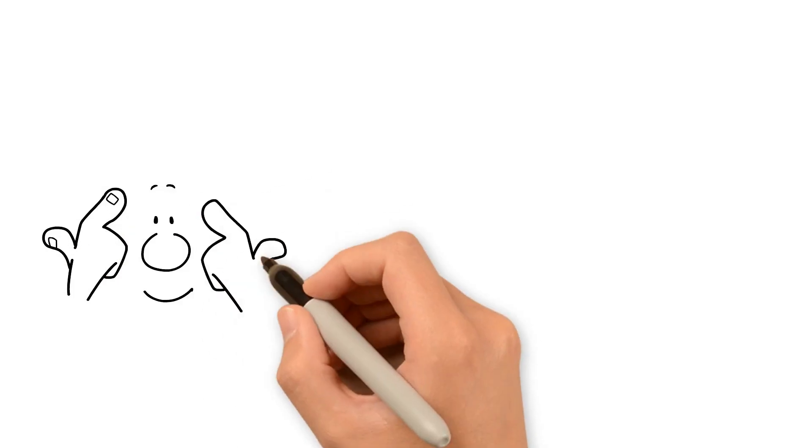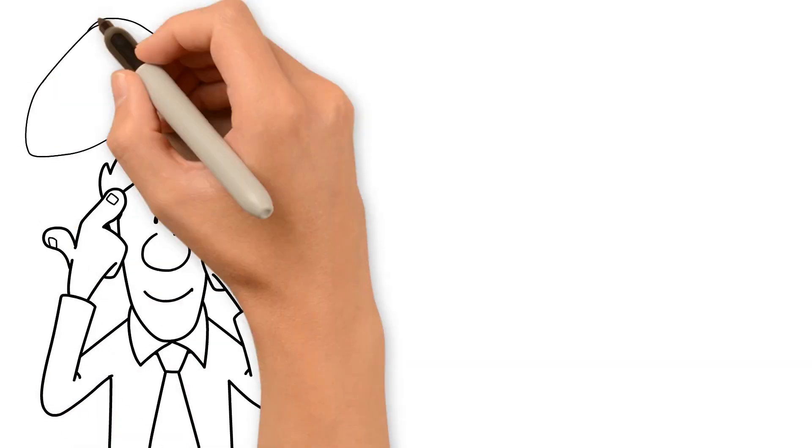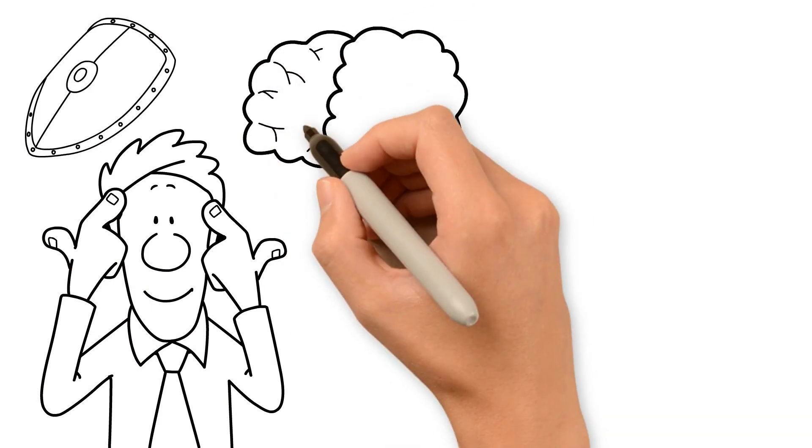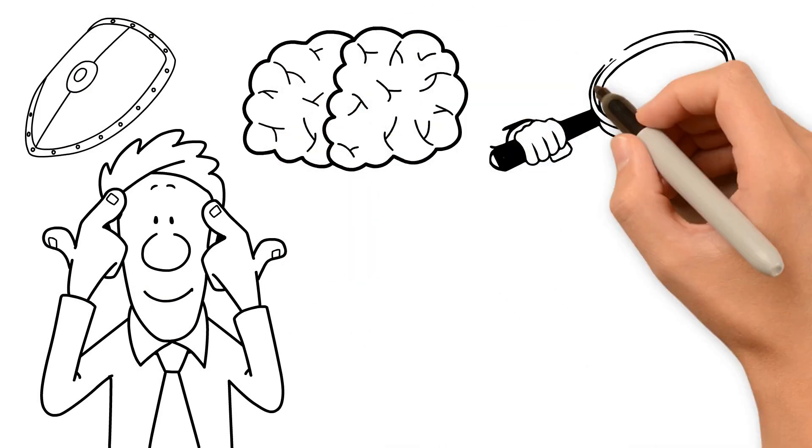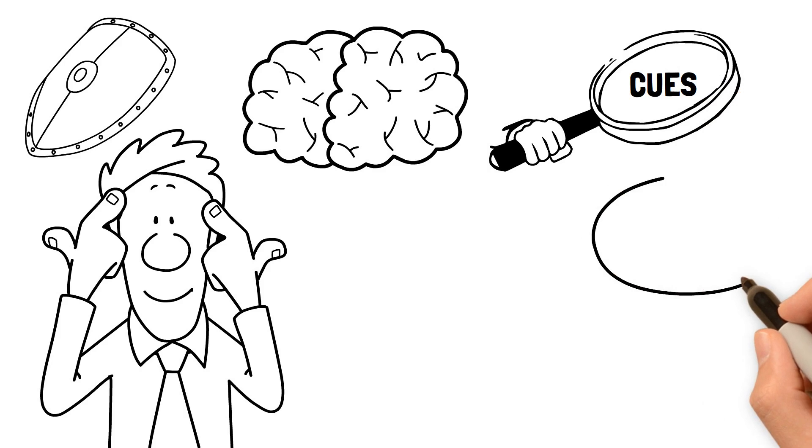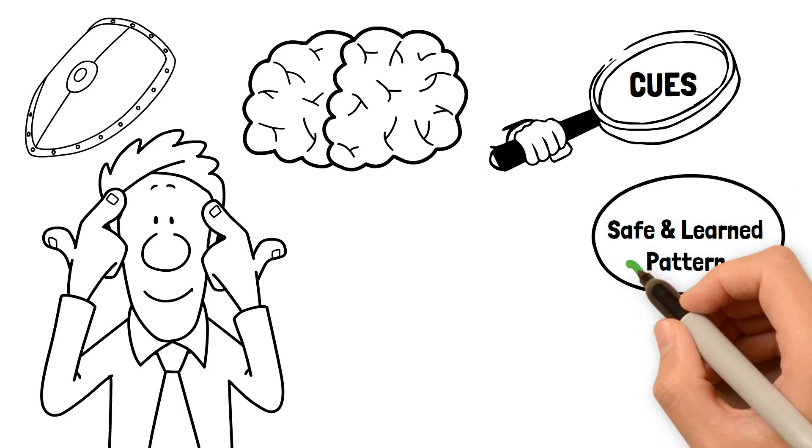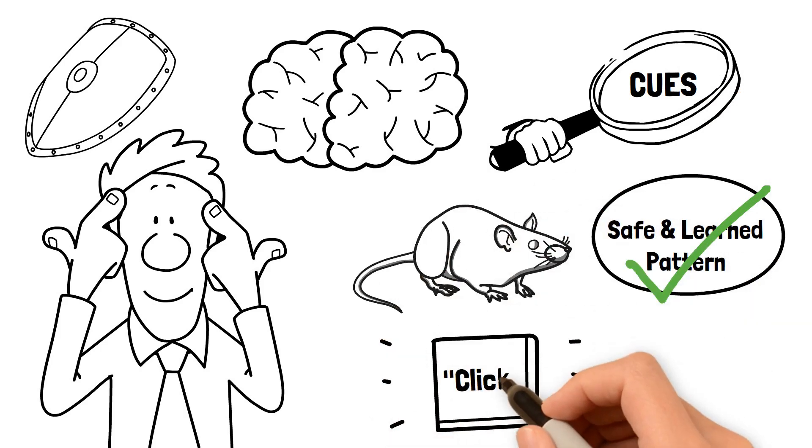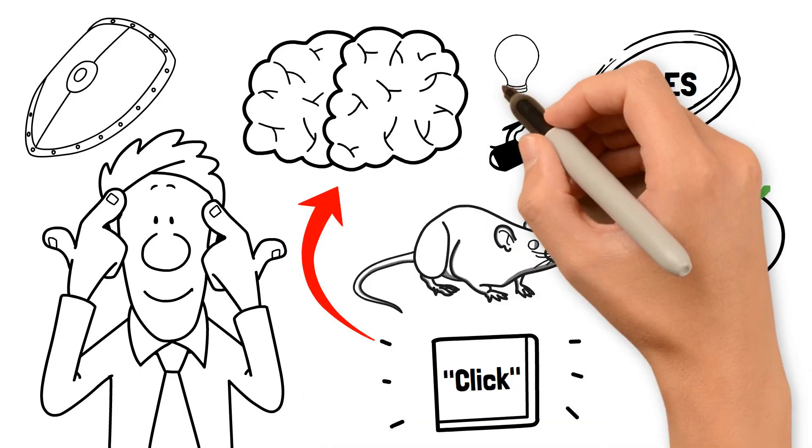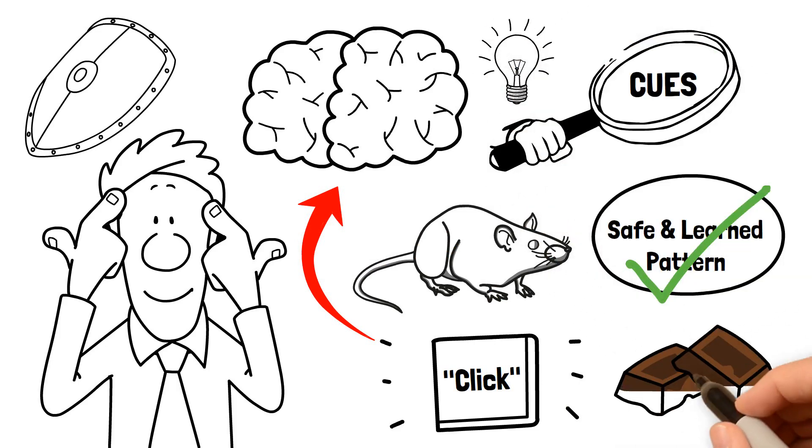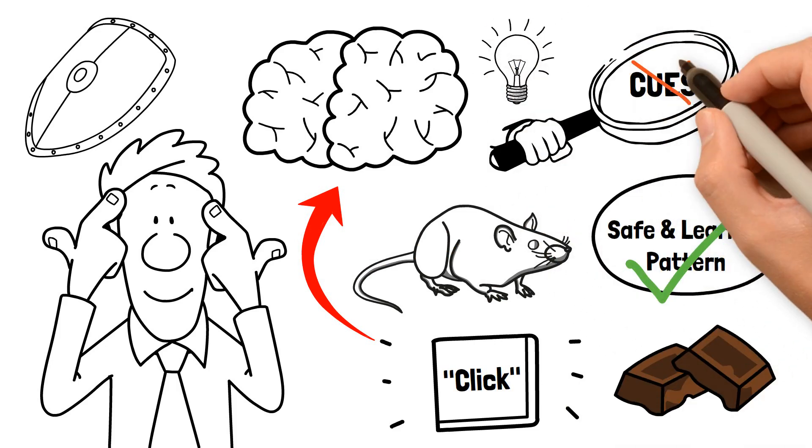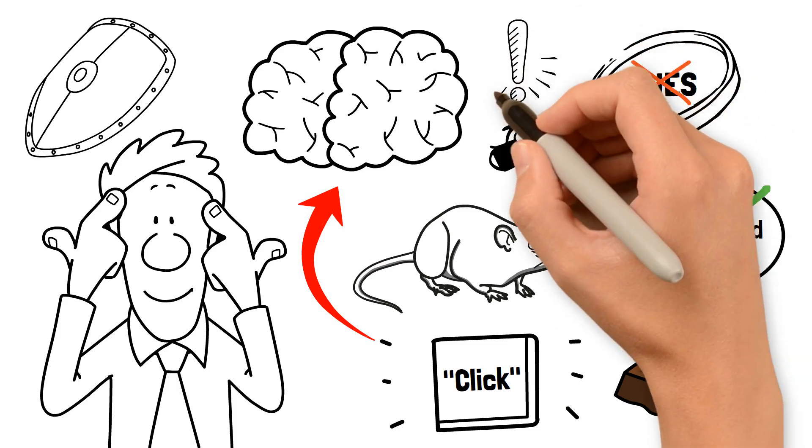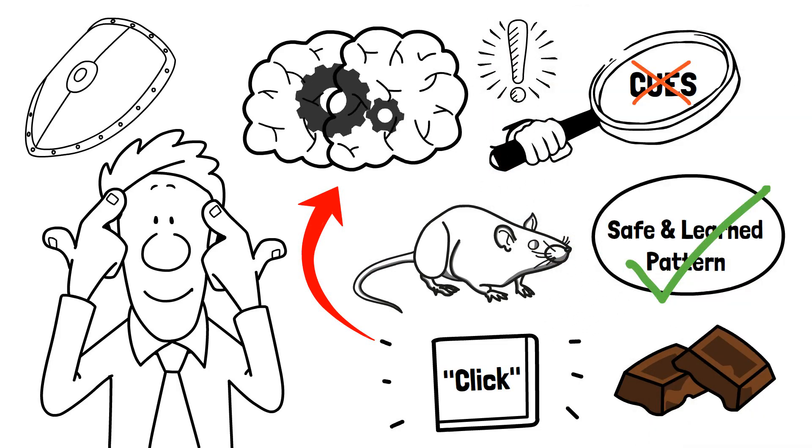No matter how much our brain wants to save energy, its prime job is to protect us. Before leaving the basal ganglia in charge, the brain looks for cues. A cue is an indicator or a trigger that says to the brain that it's safe and learned pattern. In the rat's case, the cue was the loud clicking sound. After hearing that sound, the brain knows that there is chocolate, not a cat, at the end of the maze. If it can't find a cue, the brain thinks it's a new pattern and works hard again.